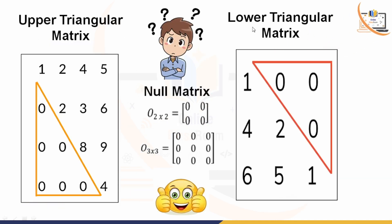Next are upper triangular and lower triangular matrices. For an upper triangular matrix, all elements below the principal diagonal are zero, while the elements on and above the diagonal are non-zero. For a lower triangular matrix, it is just the reverse — the lower portion is non-zero but all elements above the principal diagonal are zero.